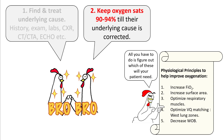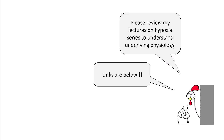As we talked about in our hypoxia series, there are 5 physiological principles that would help you improve oxygenation in any patient. These are: increasing your FiO2, increasing the surface area of absorption, optimizing your respiratory muscles, optimizing VQ matching, and decreasing work of breathing. If you want to go back and review my lectures on hypoxia and understand the physiology of how oxygen is absorbed and delivered to the tissues, links are given below.